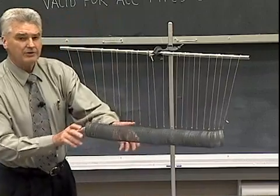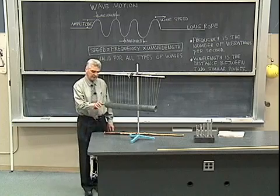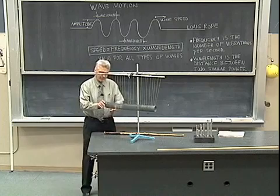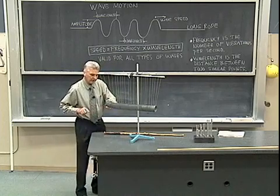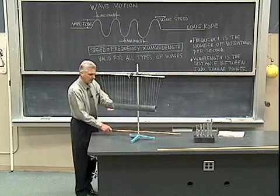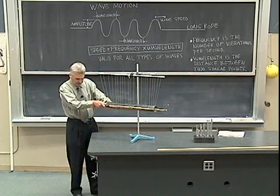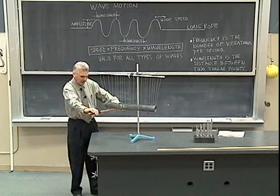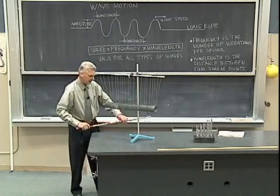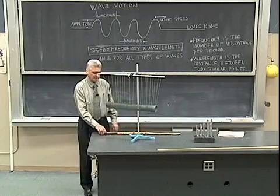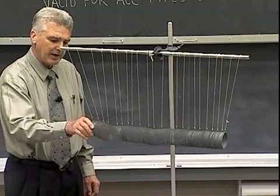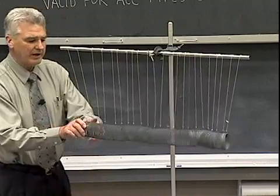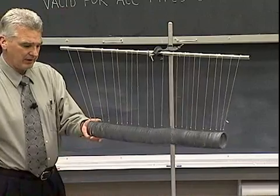Next I'd like to demonstrate transverse waves using this same slinky. This time I'm going to oscillate my hand back and forth and the waves are going to travel along the slinky. So the waves will be traveling in that direction but the particles will actually be traveling perpendicular to that direction or transverse. So if I move this slinky back and forth in that fashion then that will send transverse waves along the slinky.